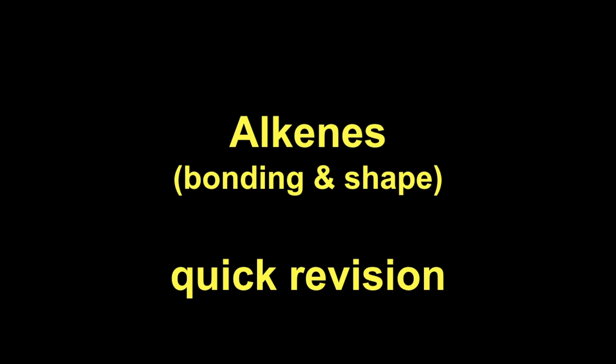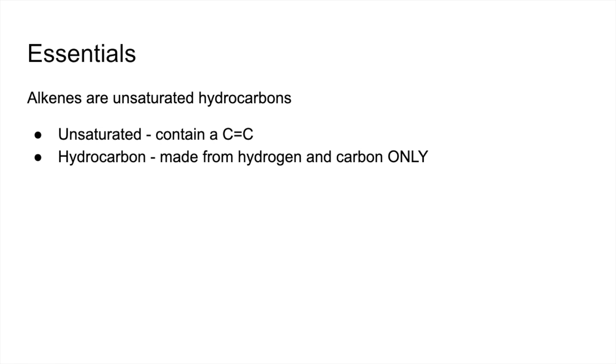This is a quick revision video on the bonding and shape in alkenes. We'll start with some essentials. Alkenes are classed as unsaturated hydrocarbons. They're unsaturated because they contain a carbon-carbon double bond, and they're hydrocarbons because they're made of hydrogen and carbon only.